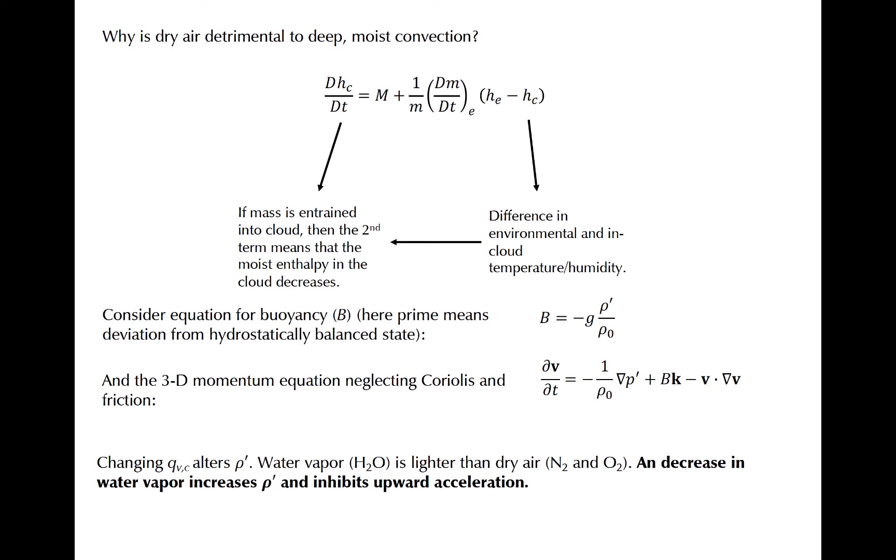Consider the definition of the buoyant force, which is shown here. Buoyancy is an acceleration that is proportional to the magnitude of the difference in density between some air parcel and surrounding air, which is what's denoted by rho prime. The 3D momentum equation tells us that positive buoyancy increases upward acceleration. This just means that if an updraft is less dense than its surroundings, it will accelerate upward. You've probably heard the notion that warm air rises. It does so because it is less dense than its environment and experiences upward buoyant acceleration.